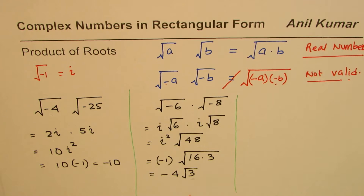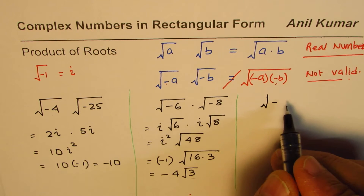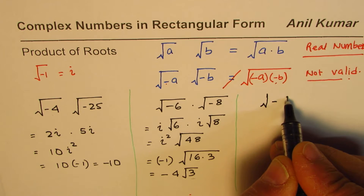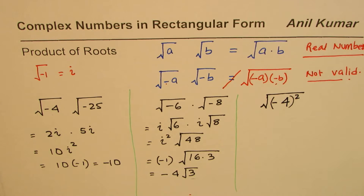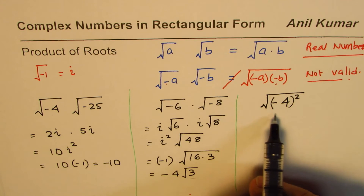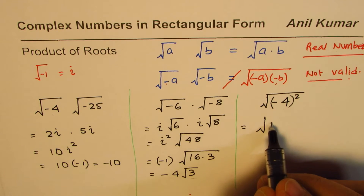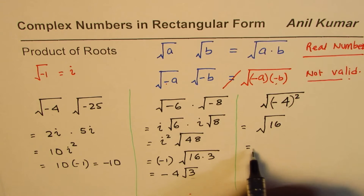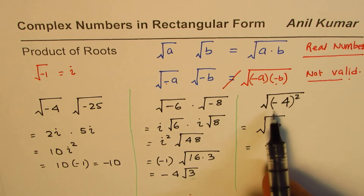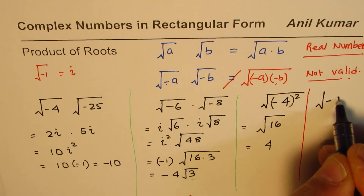Let me take one more example: square root of minus 4, whole squared. In this case, we are squaring minus 4, so minus is also squared. This gives square root of 16, and the answer is 4 — a positive number. However, if I write it in a different form — square root of negative 4 squared, where the minus sign is not squared — that changes things.